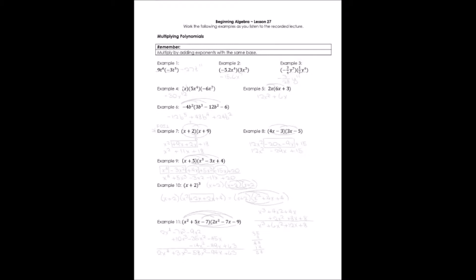Example 1 is 9t to the power of 6 times negative 3t to the power of 5. First we'll multiply the coefficients: 9 times negative 3 is negative 27. Then t to the power of 6 times t to the power of 5 — adding the exponents — gives us t to the 11th. So our final term is negative 27t to the 11th.